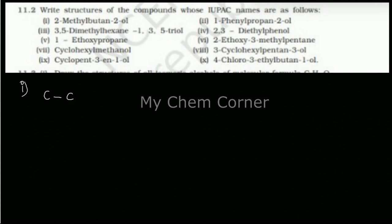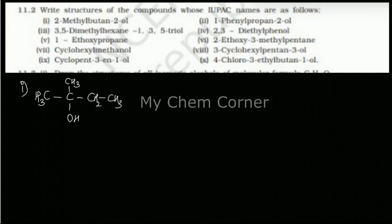Butane is a four-carbon chain, so draw four carbons. At the second position it says 2-ol, which means the alcoholic OH group. The substituent says 2-methyl, so on the same carbon I'm going to put a CH3. Then fill in the remaining hydrogens based on the valency of carbon — giving CH2 and CH3 — and that completes the structure of the first name.